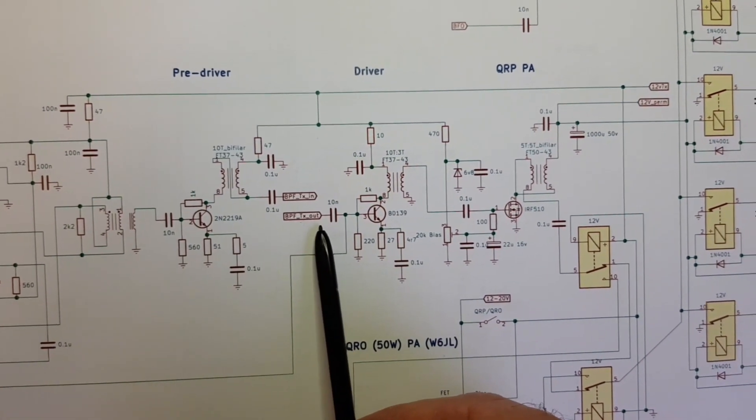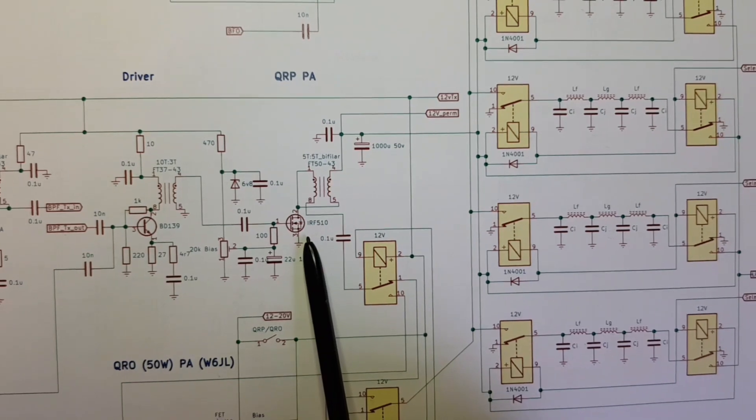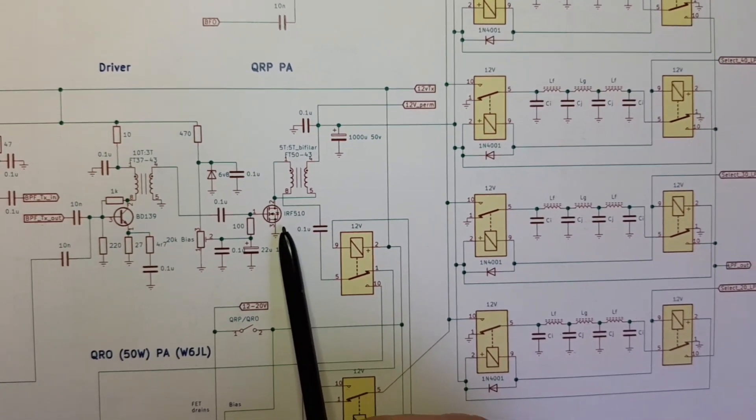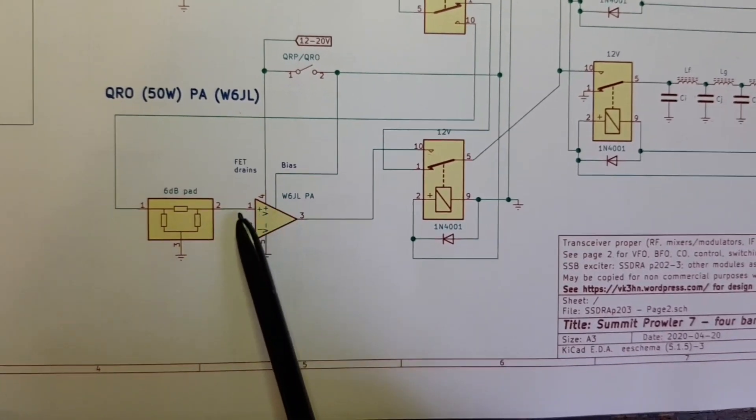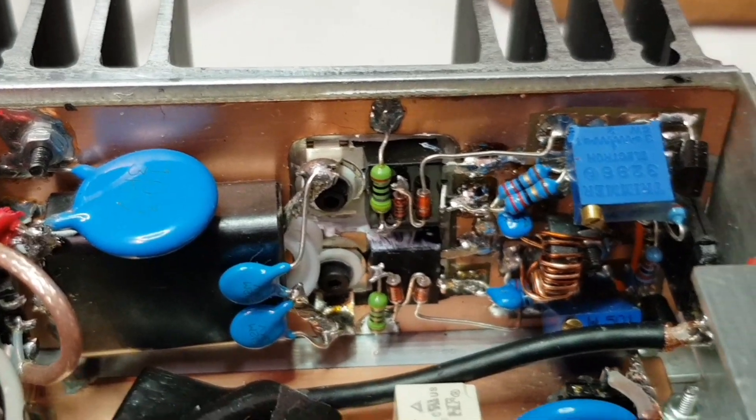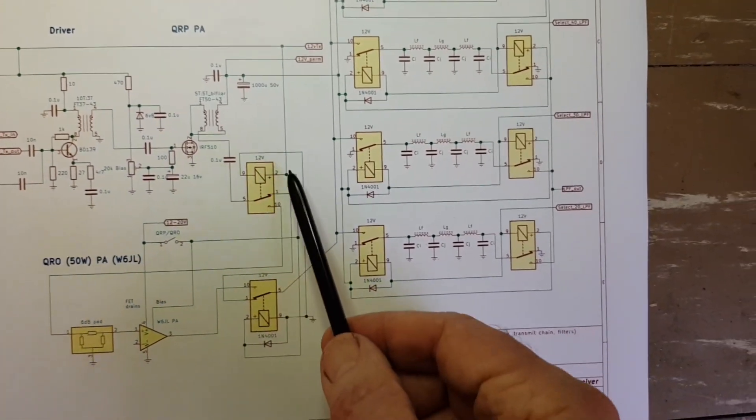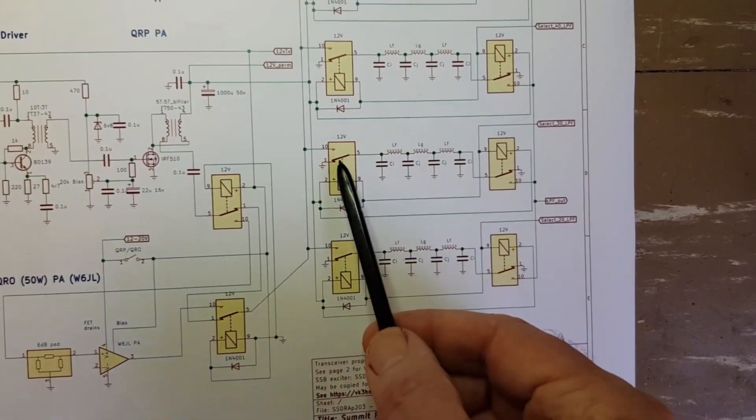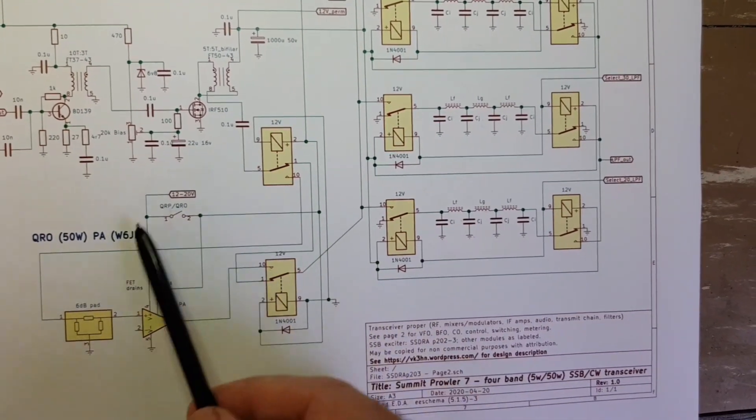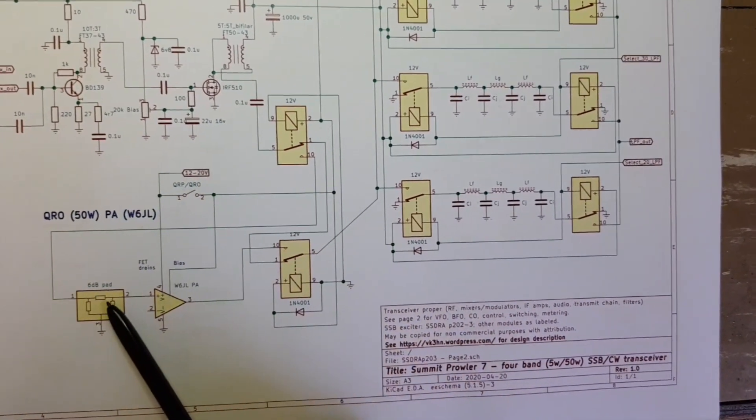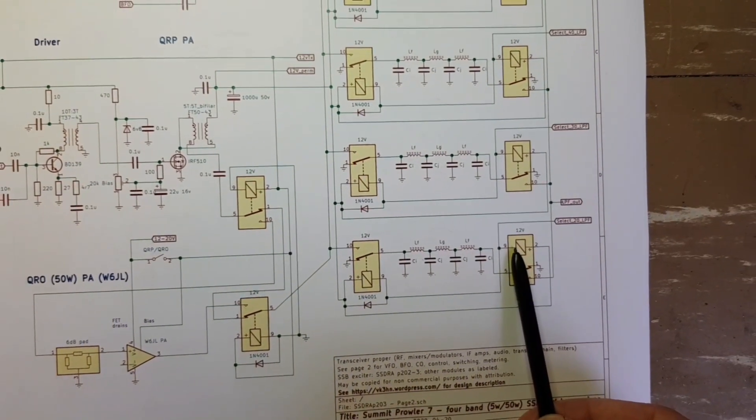Upon returning we've got signal energy at the band of interest. There's a BD139 driver and an IRF510 QRP PA for 5 to 10 watts. Included is a W6JL 50 watt PA. The schematic is not shown there, it's just shown as a block. But this 50 watt PA can be switched in and out. So when it's switched out, the IRF510 is switched straight through to one of the four low pass filters. When the 50 watt power amp is switched in, the IRF510 becomes a driver through a pad to get the levels right, and into the 50 watt amplifier module, and then straight out into the same low pass filters.